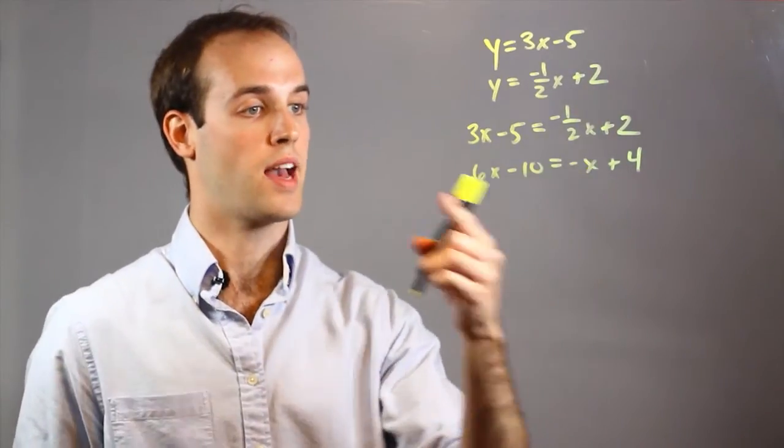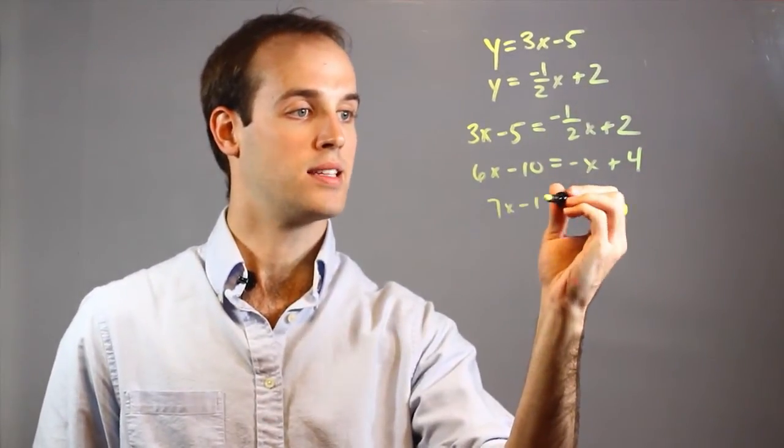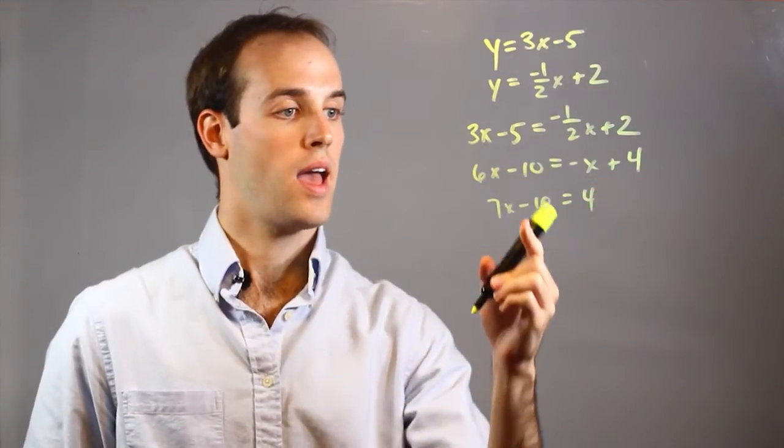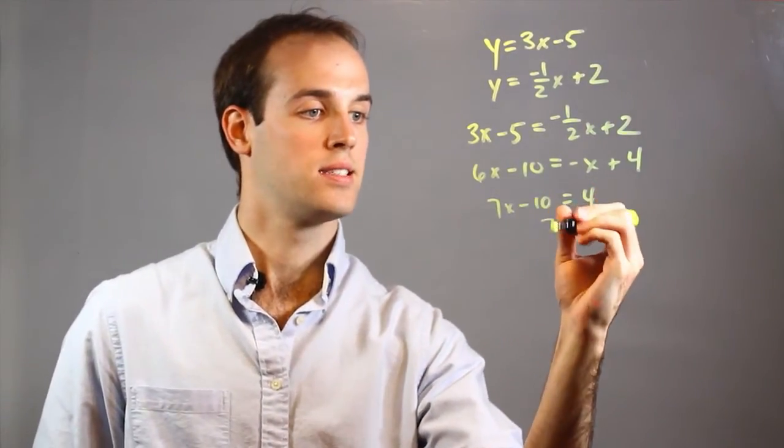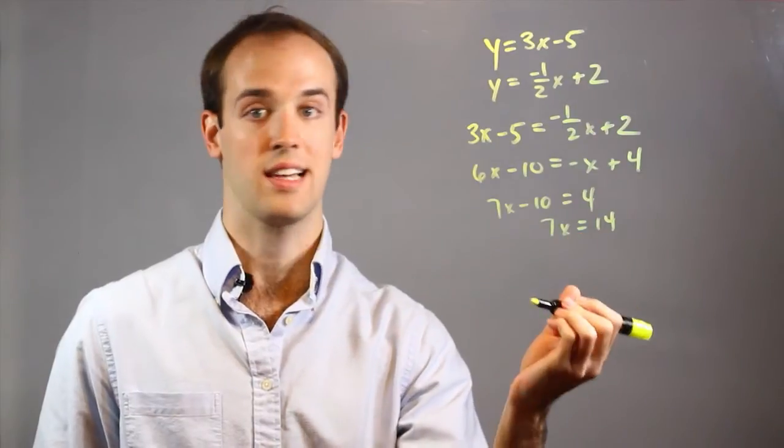Then I will bring this x over to this side by adding it. 7x minus 10 equals 4. And then I will add 10 to both sides.